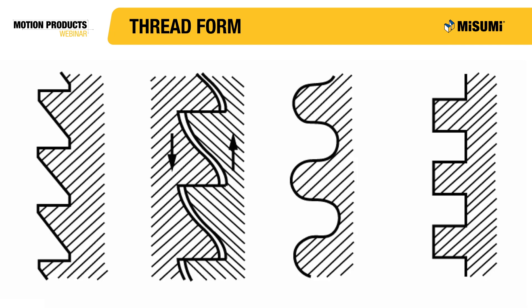Lead screws don't use the Unified Thread Standard or ISO metric screw thread, as those forms are V-shaped. The V-shaped design produces more friction between the nuts and the shaft, which is desirable in fastening as it helps prevent the nut from loosening. But as a lead screw is not used for fastening, any extra friction would not be desirable. They utilize a couple of different thread forms.